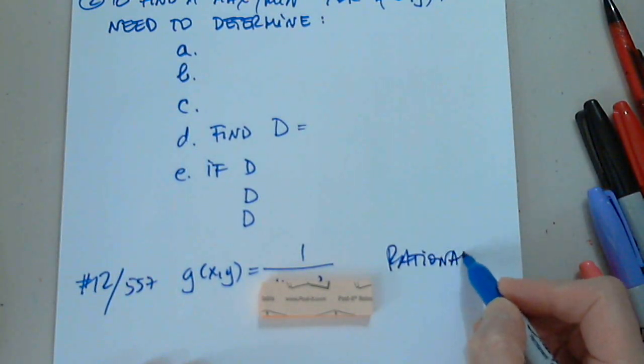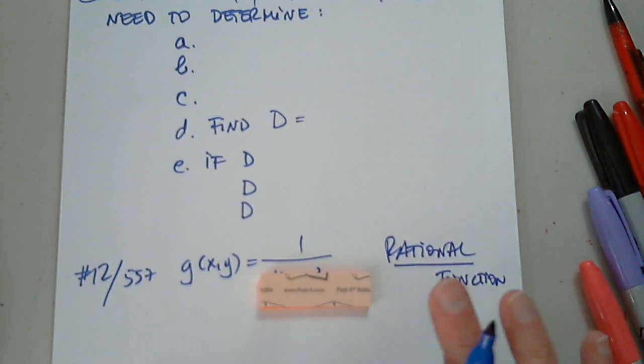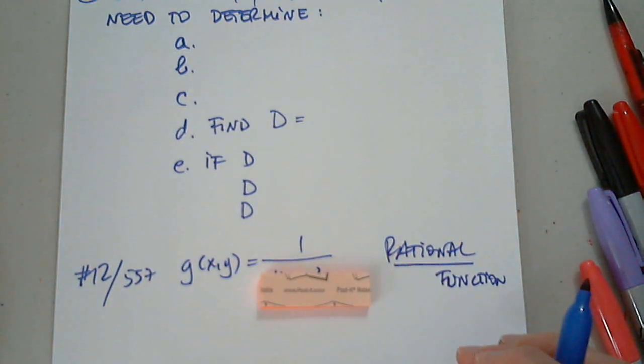What do we worry about rational function? What is our only worry if it's a pure rational function, which it is? What is our only worry here?